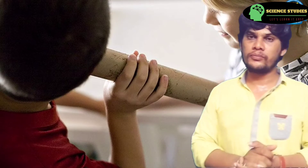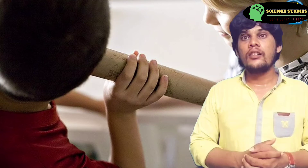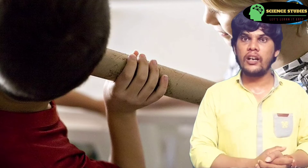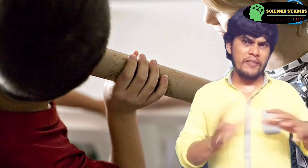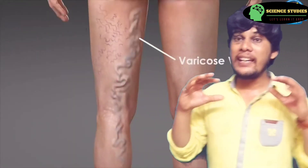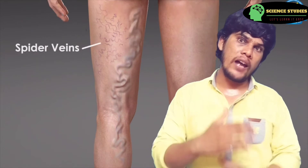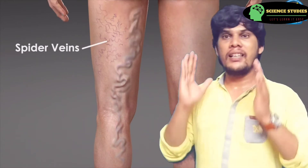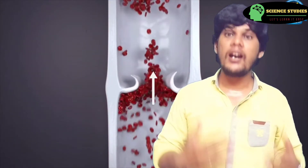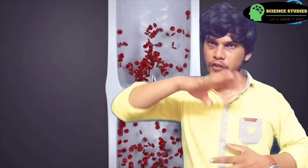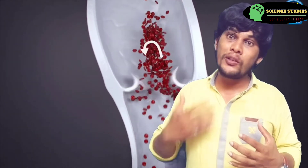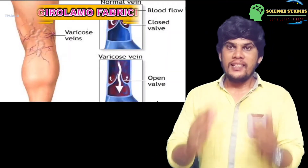Now let's learn about the discovery of valves. In the previous session we discussed that there are no valves in arteries, but veins contain valves. We also discussed some valves present in the heart — tricuspid valve, bicuspid valve, pulmonary valve, and systemic valve. These four valves are present in the heart. But in the olden days, who discovered these valves in the veins?